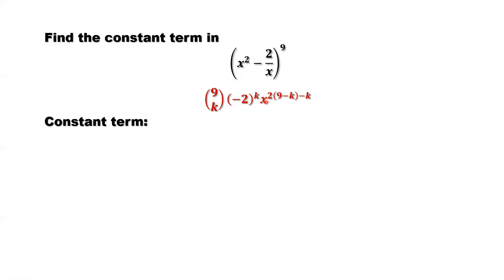This implies the power of x, 2 times 9 minus k minus k, must be equal to 0. x to the power 0 is 1, so the x term disappeared.